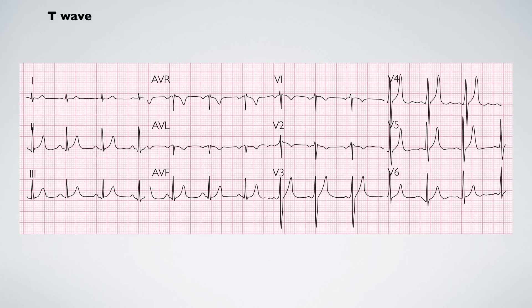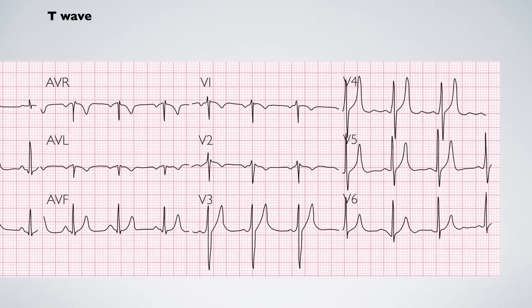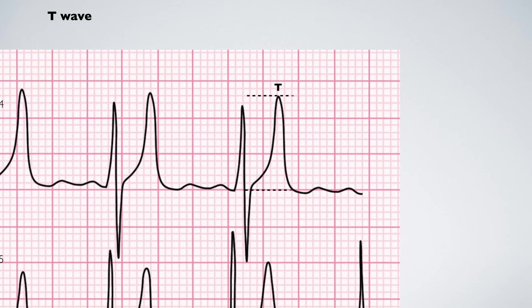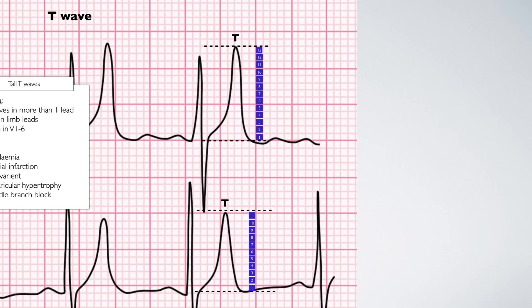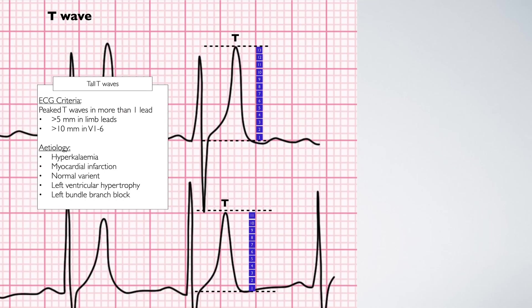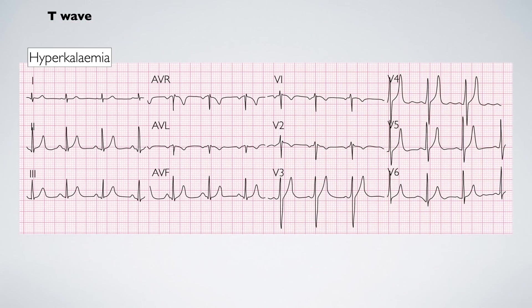The next presentation to be aware of is tall or peaked T-waves. Tall T-waves are significant if they are greater than five small squares in the limb leads and 10 small squares in V1 to V6. Tall T-waves are the first ECG change present in hyperkalemia.